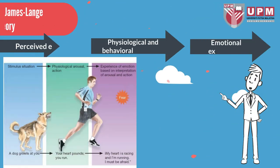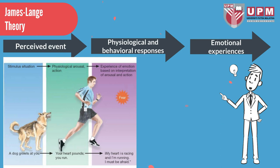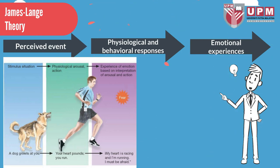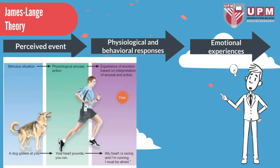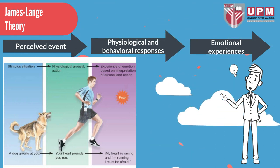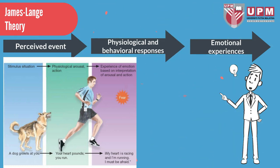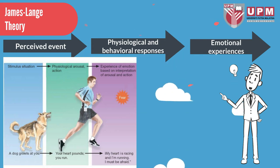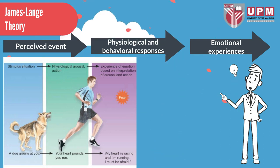First, let's take a look at James-Lange theory. Through this theory, emotion arises from physiological arousal. For example, happiness comes from smiling and sadness comes from crying. Emotional results when an individual becomes aware of their physiological response.